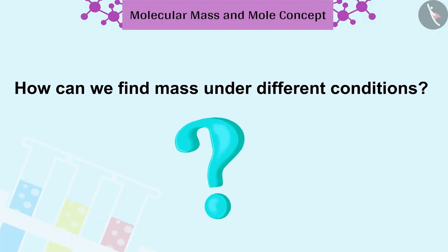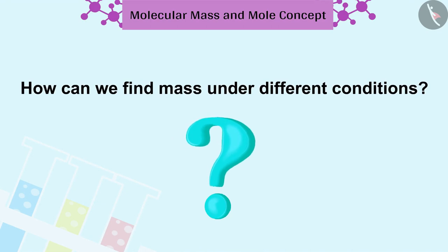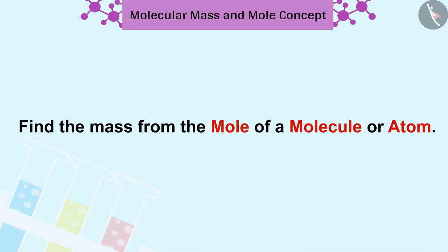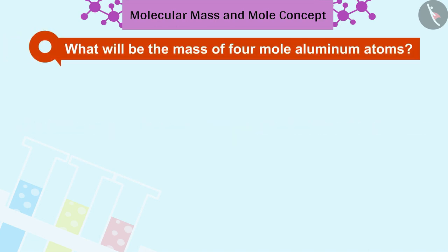Now we will see how can we find mass under different conditions. First, we will learn to find the mass from the mole of a molecule or atom. Let's see what will be the mass of 4 mole aluminum atoms.